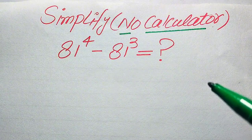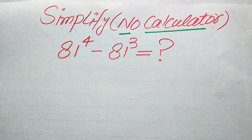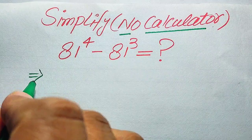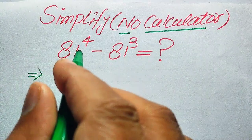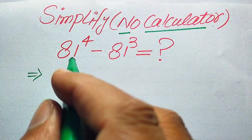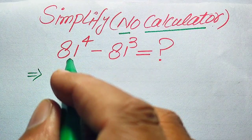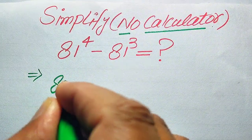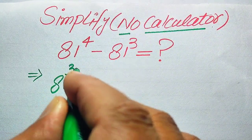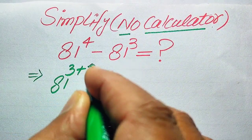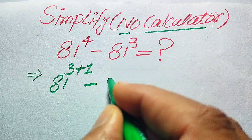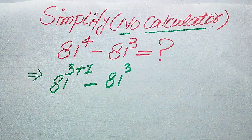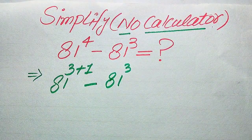The very first thing we are going to do is focus on the exponent of the first term. The exponent is 4, so we break this 4 as 3 plus 1. So we write 81 to the power of 3 plus 1, minus 81 to the power of 3.